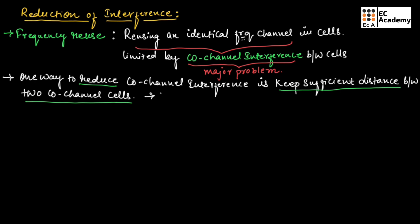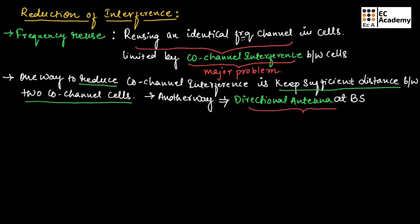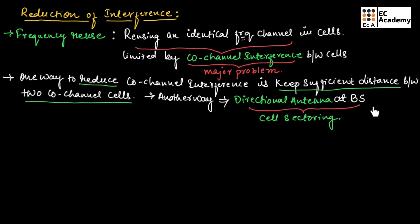Another way is to use a directional antenna at the base station, and this process is known as cell sectoring. So one way to reduce co-channel interference is to keep sufficient distance between two co-channel cells, and another way is to use a directional antenna at the base station — this is known as cell sectoring.